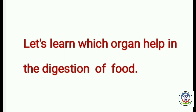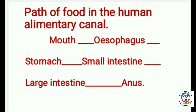Let us learn how each organ helps in the digestion of food. The food gets digested as it travels through the various organs of the digestive tract or alimentary canal. The path of food from the mouth to the excretory organs, involving stages from ingestion to egestion, follows this route: mouth, esophagus, stomach, small intestine, large intestine, anus.